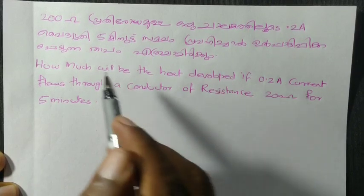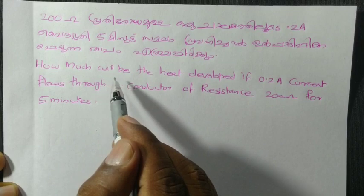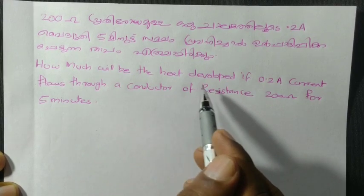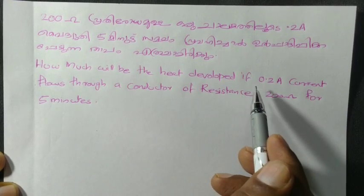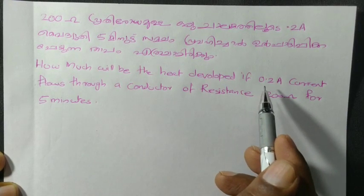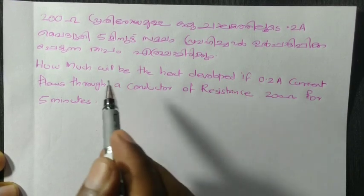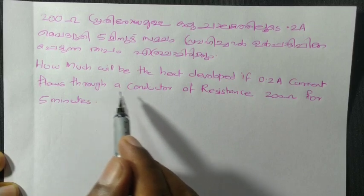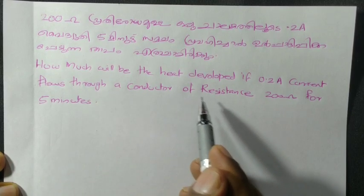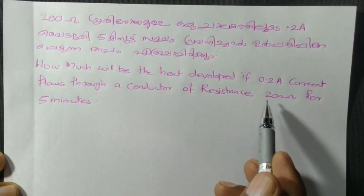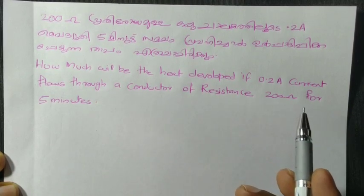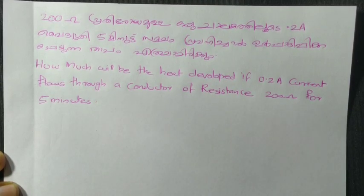How much will be the heat developed if 0.2 A current flows through a conductor of resistance 200 Ohm for 5 minutes?